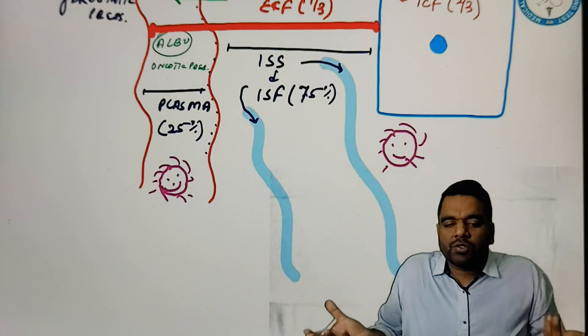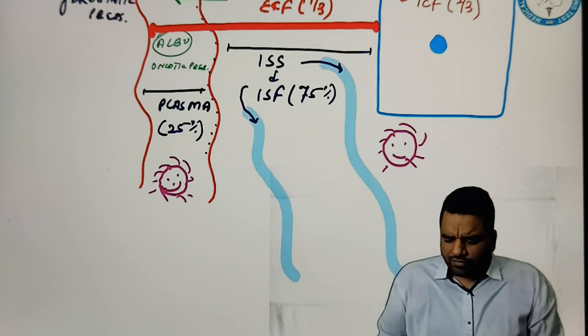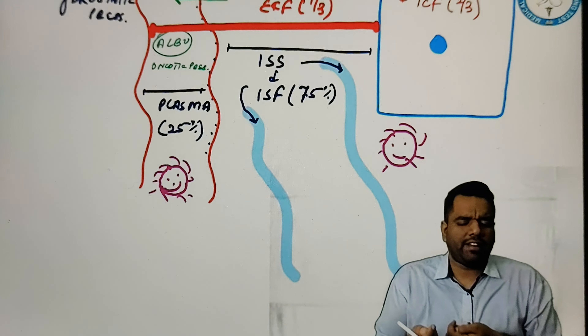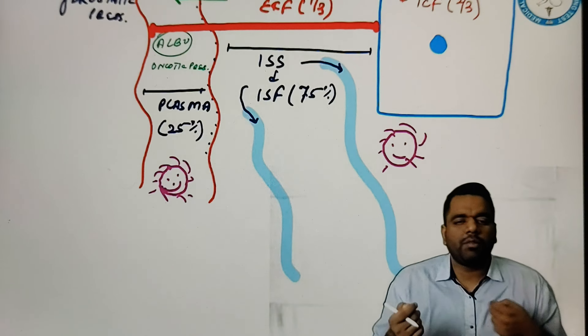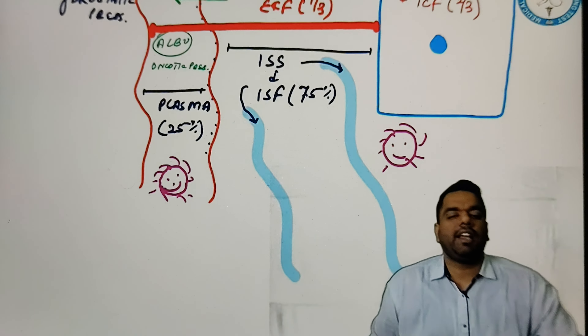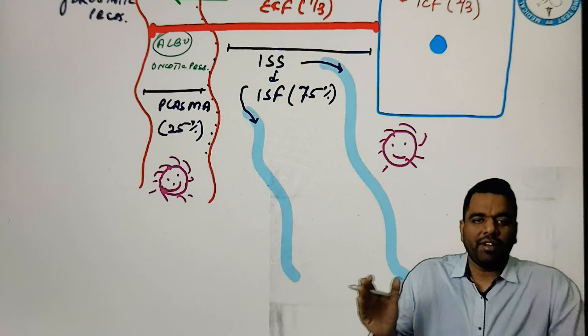And this lysosome is called the suicidal bag. That's why this lysosome is having acid in it. What will happen? This lysosome will immediately come and splash the acid on the bacteria.